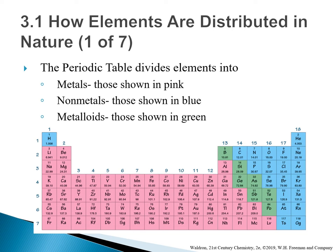The periodic table divides elements into three categories: metals, non-metals, and metalloids. Metals are shown in pink color, non-metals are shown in blue color, and metalloids are shown in green color. In some versions of the periodic table, you often see a line start under boron and join as a little staircase all the way through. This line separates the metals from the non-metals, with metalloids that sit above and below the staircase, with the exception of hydrogen being on the far left corner.